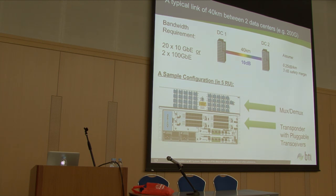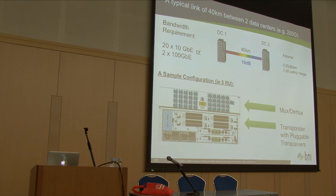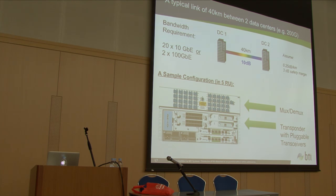A question came up: can you use a box — not a transponder, but something like color optics in a switch? Yes, absolutely. A lot of switching companies now have their own color optics. If the specs work, in most cases you can use this MUX-DMUX and plug your switch's color optics directly in and transmit — it doesn't have to be a transponder if you already have color optics in your switch. Or if you want 100 gig, you can multiplex 10+10 onto a 100 gig wavelength, using just two ports of a 40-port MUX-DMUX. That's how you provide a 200 gig link between two sites.